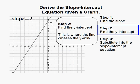Step two, find the y-intercept. This is where the line crosses the y-axis. The line crosses the y-axis, which is right here, at 8. So our y-intercept is 8.